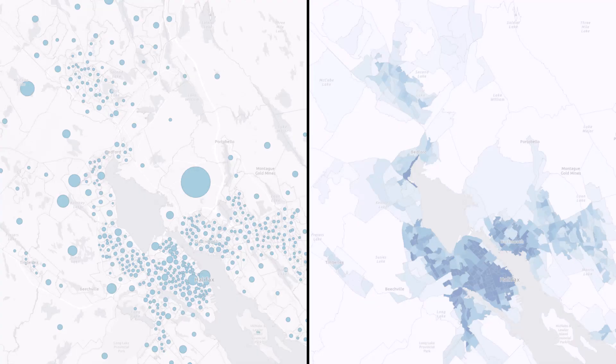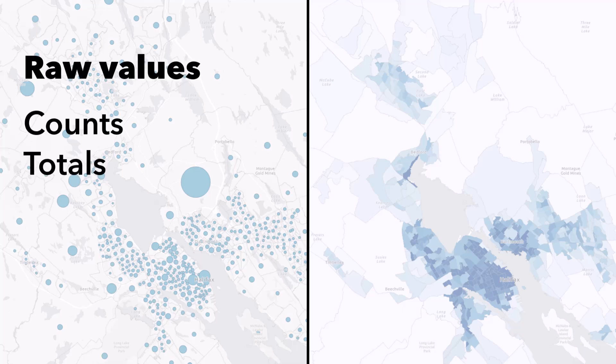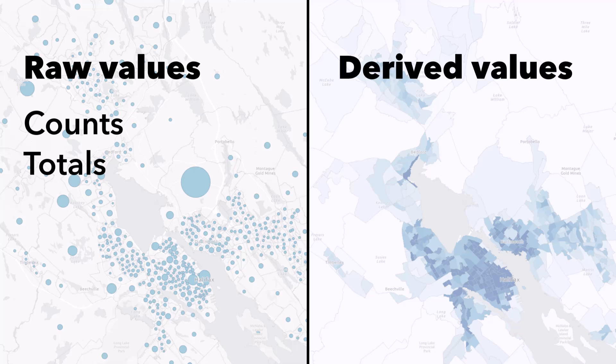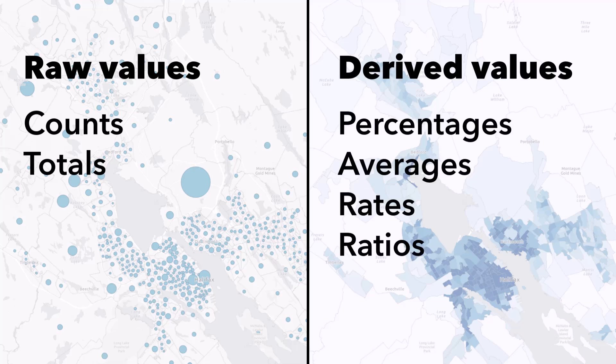To answer that question, I need to know if the attribute contains raw values like counts or totals, or derived values like percentages, averages, rates, or ratios. Raw values should be mapped with size and derived values with color.